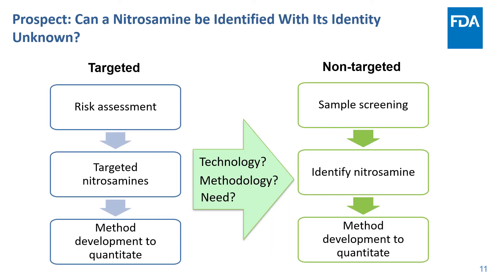Currently, nitrosamine analysis mostly follows the approach of targeted analysis because of the low-level presence of this group of analytes. By this approach, the identity of the nitrosamine needs to be known first in order to develop a method to find it in a sample. Will it be beneficial if we adopt a non-targeted approach in some cases?